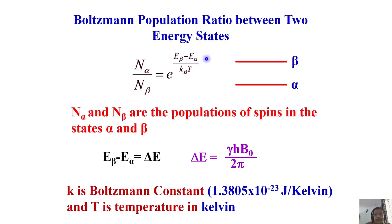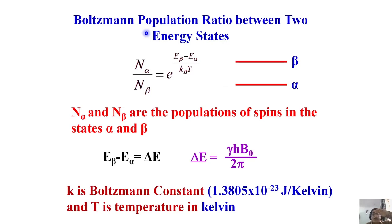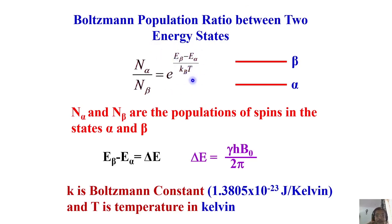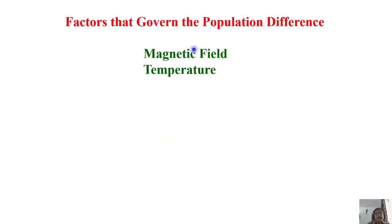When does energy separation become larger? It is linearly proportional to the magnetic field — so as the magnetic field keeps increasing, energy separation becomes larger and larger. According to this equation, greater energy separation means a larger population ratio. The second factor is temperature — temperature is in the denominator. I can vary T: if temperature decreases, this ratio increases; if temperature increases, it decreases.